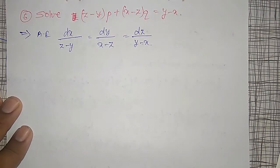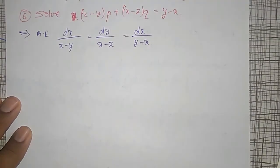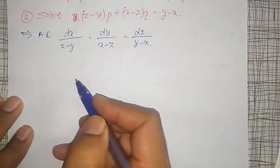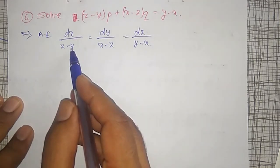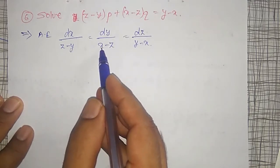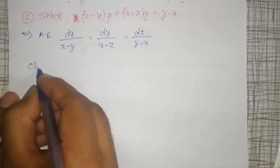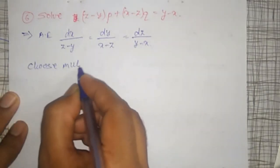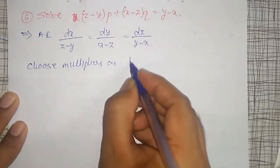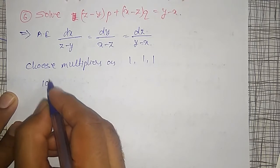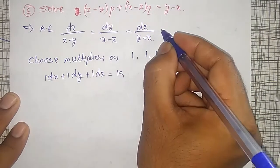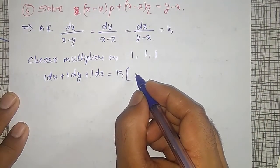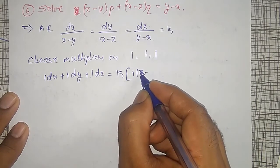If I choose any two of them, it is not possible to cancel the terms because additions and subtractions are involved. Therefore I have to choose multipliers. Observing that Z minus Z, Y minus Y, and X minus X all cancel, let me choose multipliers as 1, 1, 1. Therefore dx + dy + dz equals K times 1·(Z - Y) + 1·(X - Z) + 1·(Y - X).